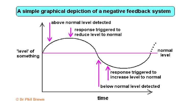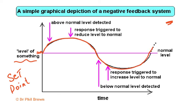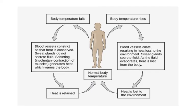A simple graphical depiction of a negative feedback system — this appears a lot in MCQs. There is a set point, for example blood glucose between 80 and 120. Above normal, when you eat carbohydrates, the level increases, a response is triggered to reduce it back to normal. Below normal, a response is triggered to increase it back to normal. The normal level is maintained at all times. This applies to temperature as well — a change above or below the set point triggers a corrective response.